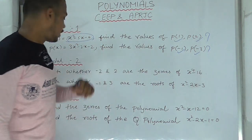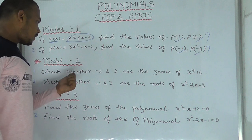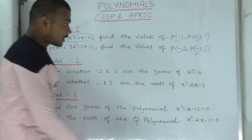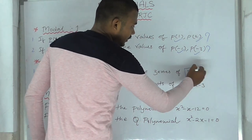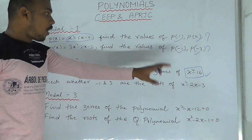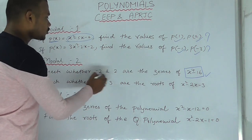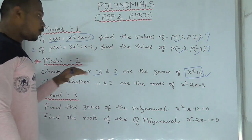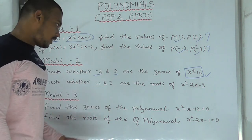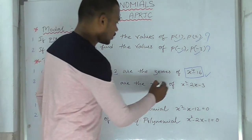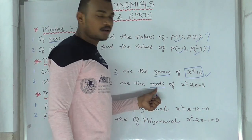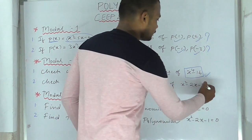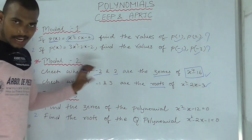This is the first model. Coming to the next model: check whether minus 2 and 2 are the zeros of x to the power 4 minus 16. What are the zeros? Minus 2 and 2 — check whether these are the zeros. Also check whether minus 1 and 3 are the roots of x squared minus 2x minus 3. Zeros and roots are the same — don't get confused.